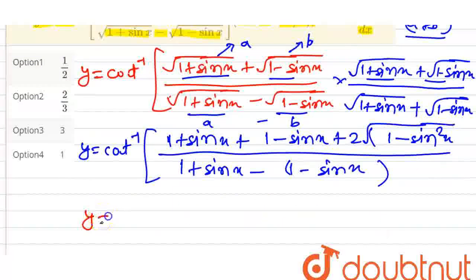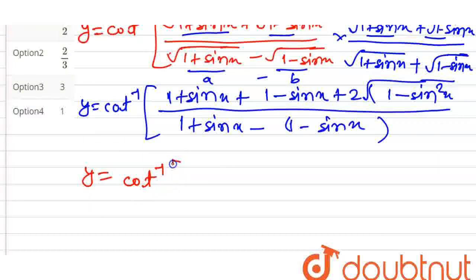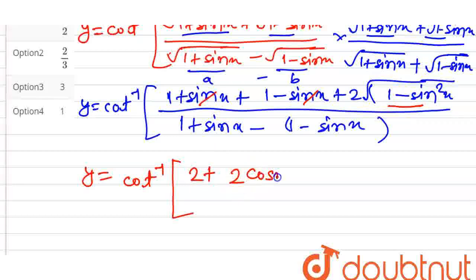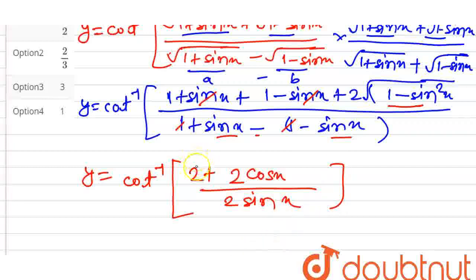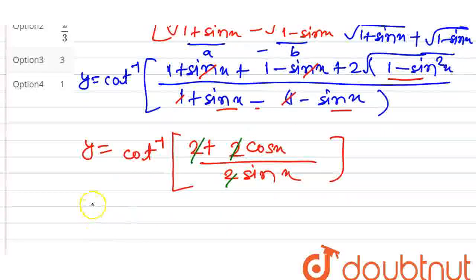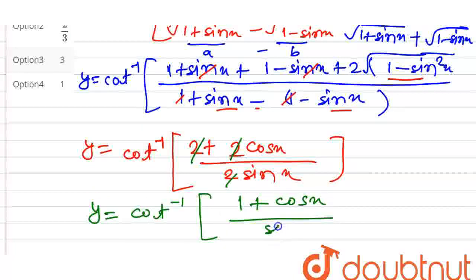On further solving, we get y equal to cot inverse of: the numerator gives 1+1 = 2, and root(1-sin²x) = root(cos²x) = cosx, so numerator is 2 + 2cosx. The denominator: the 1 and -1 cancel and the two minus signs give +sinx + sinx = 2sinx. The 2s cancel, giving y = cot inverse[(1+cosx)/sinx].